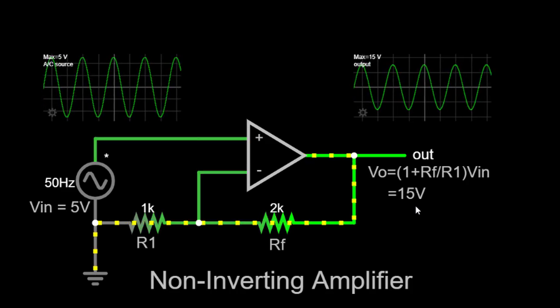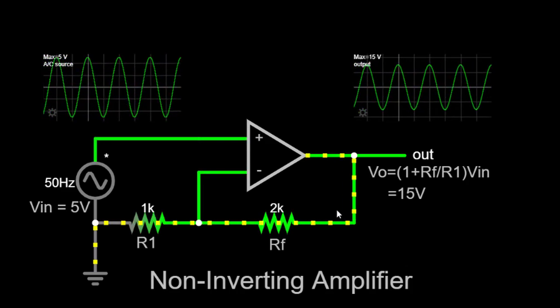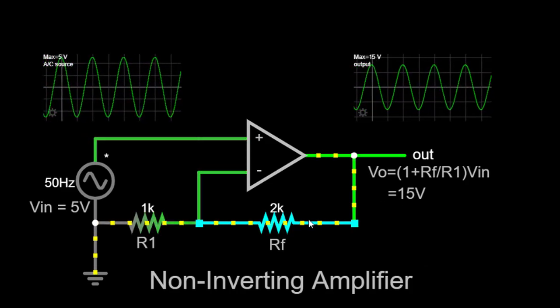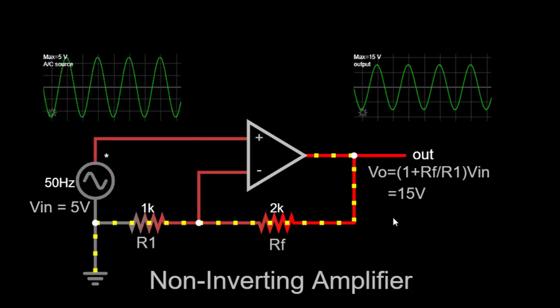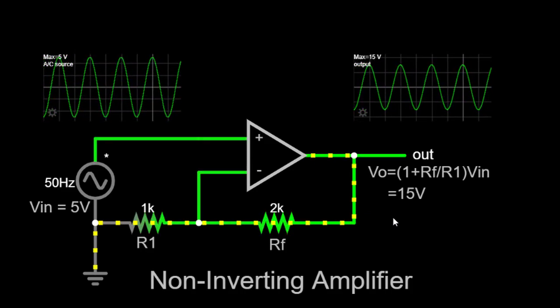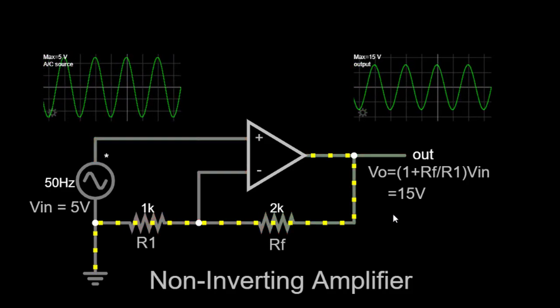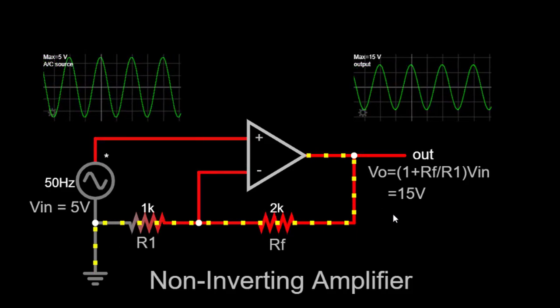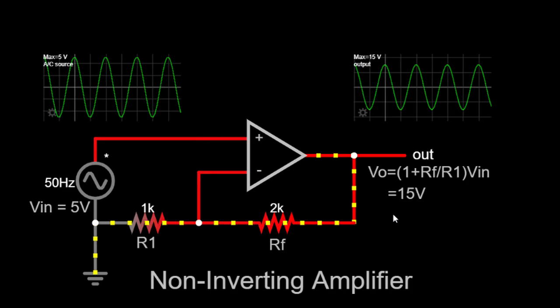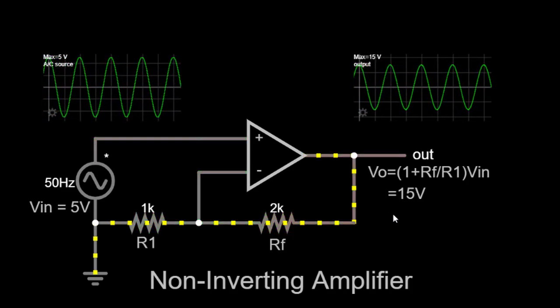By adjusting the values of the resistors, we can vary the gain of the non-inverting amplifier. Increasing the value of the feedback resistor relative to the input resistor will increase the gain, while decreasing the value will reduce the gain. This allows us to tailor the amplification according to our specific needs.